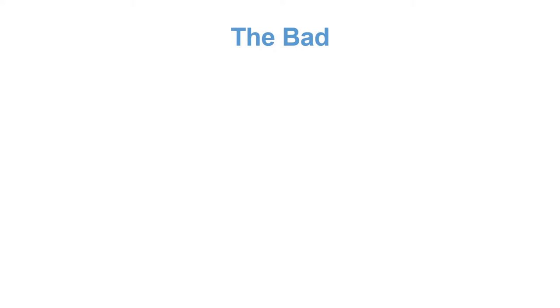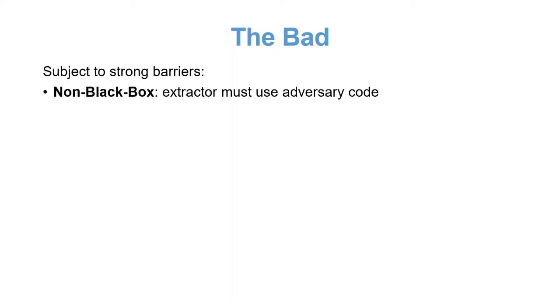So where is the catch? The bad thing is that constructing such functions is subject to strong barriers. First, since there is no interaction, traditional black box extraction techniques provably do not work. For example, rewinding becomes useless. So the extractor must use the code of the adversary in a non-black box manner. This by itself already makes the task very challenging, as we have only a few non-black box techniques.